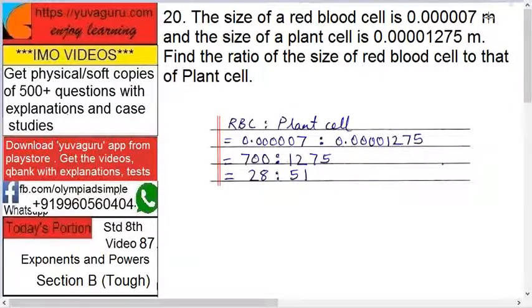What you have to do is just divide them: 0.000007 divided by 0.0001275. Remove the number of zeros - how many have gone from here? Three plus three equals six. How many from here? Three plus three equals six. So two zeros would be added in the numerator: 700 upon 1275.